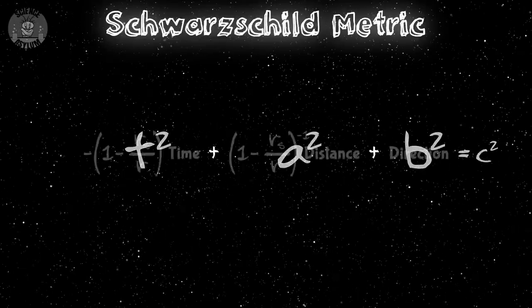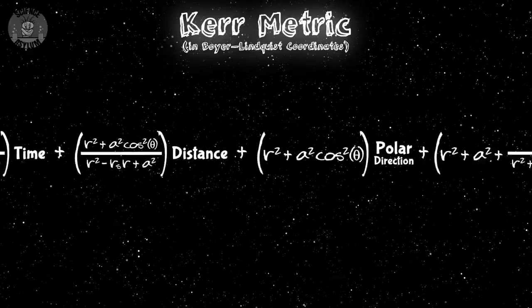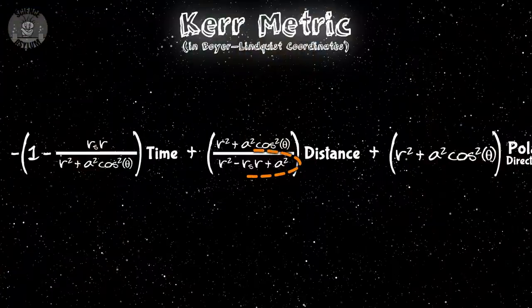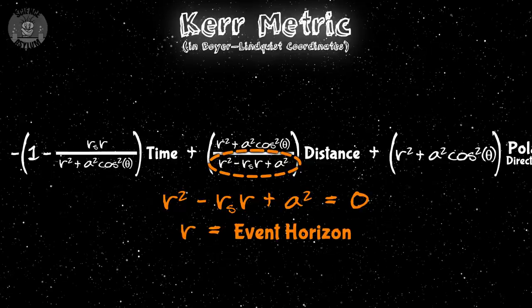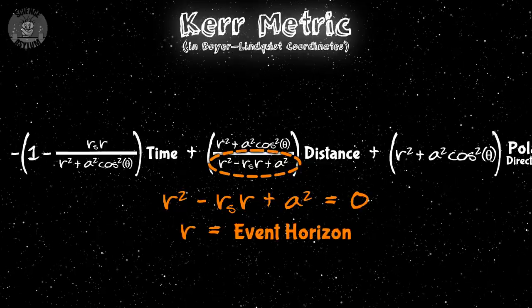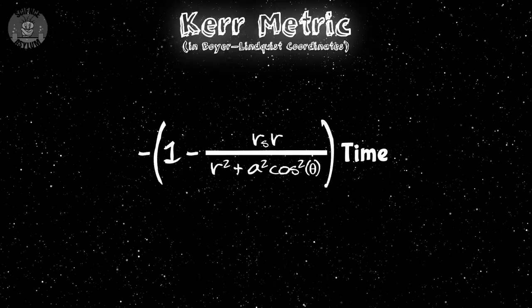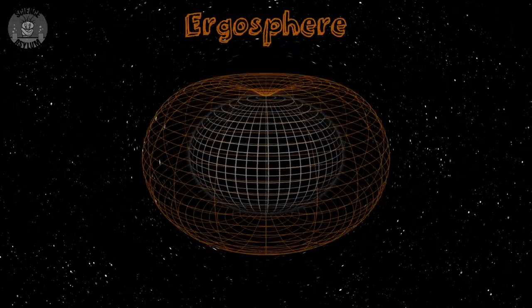If you're subscribed and have been watching for a while, you've seen this before. This is the metric around a rotating black hole. Angular momentum really messes everything up — it's nasty. Thankfully, we don't need to do any crazy math with it; we just need to look for some patterns. This term here is in a denominator, so when it's zero, the fraction blows up to infinity — that tells us where the event horizon is. This other term goes to zero before we get to the event horizon, and where that happens is the outer edge of the Ergosphere.